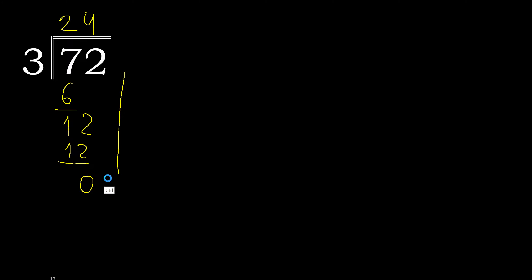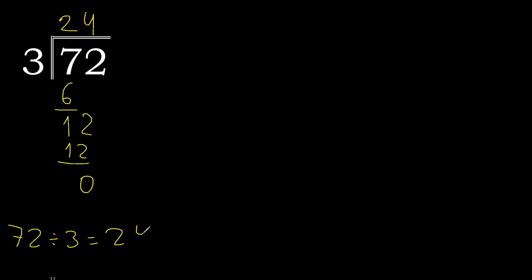That is not a number, and here is 0, therefore finish. Remainder is 0. 72 divided by 3 is 24. Finish.